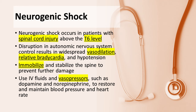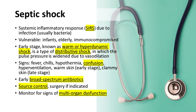Intravenous fluids and vasopressors such as dopamine and norepinephrine may be necessary to restore and maintain blood pressure and heart rate in neurogenic shock. Septic shock results from widespread infection, usually due to bacteria, leading to a systemic inflammatory response.